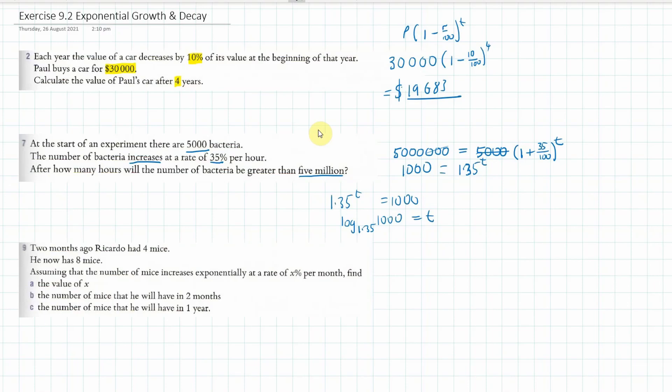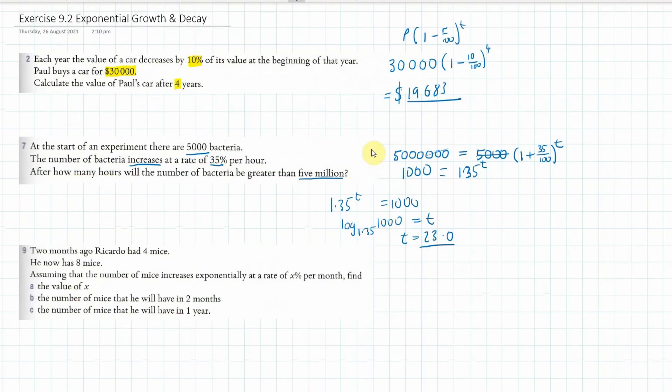So in the first little square you're going to write 1.35, and in the next square in the brackets you're going to write 1,000. And this gives you t is equal to 23.0.